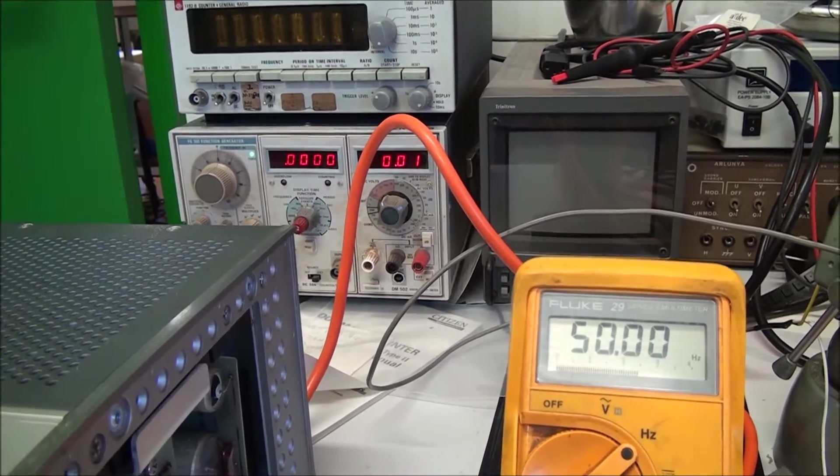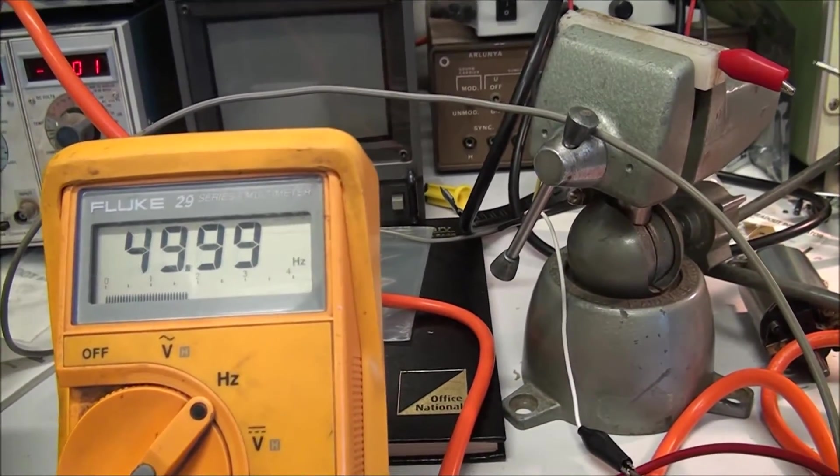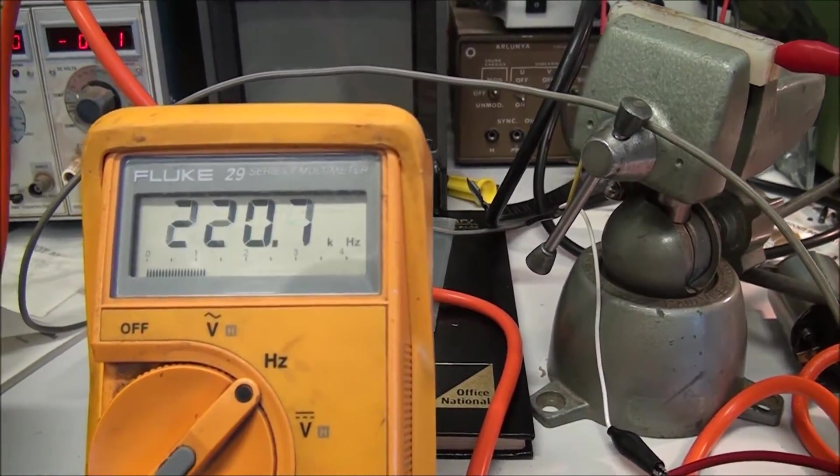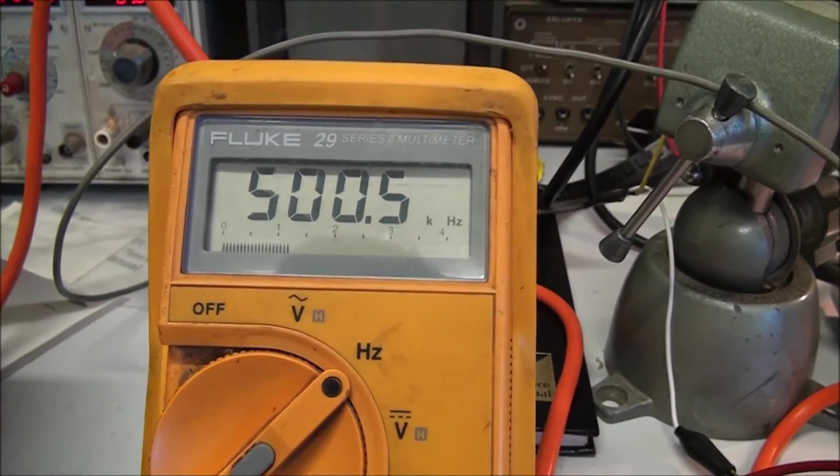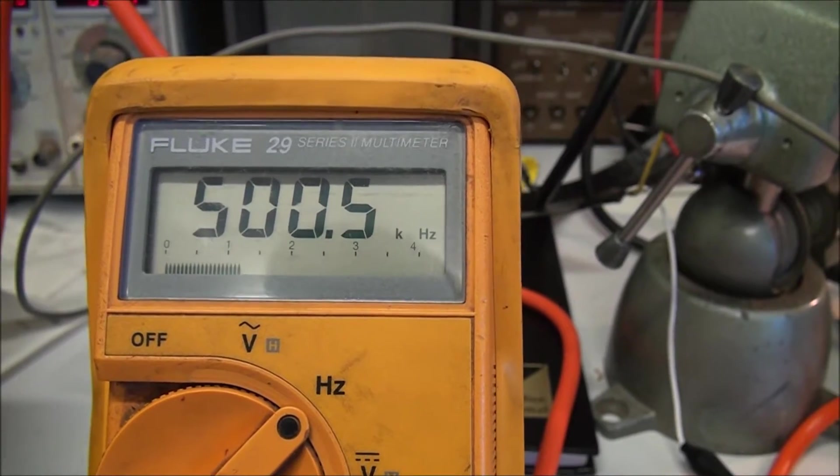I'll put a frequency into the instrument to see how it goes, and I'll just compare it with a Fluke multimeter. So there we are, straight away it's displaying 500.5 kilohertz.